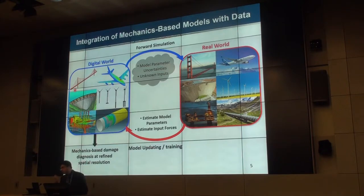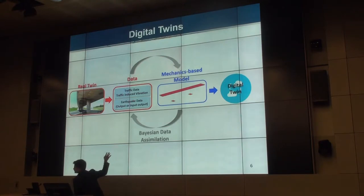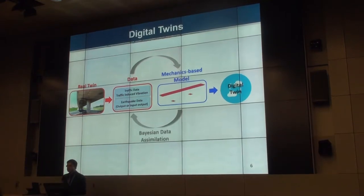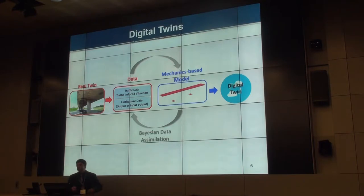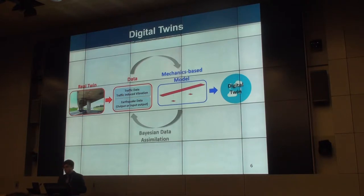This is a really powerful tool that may provide a lot of useful information. We have a real-world structure — a bridge — we develop a mechanics-based model of it, and then we collect data from the real-world structure. The data can be traffic data or earthquake data. We then continuously and iteratively train our model with this data to reduce uncertainties in the parameters and inputs. The outcome is what we call a digital twin — a digital replicate of the real-world asset that evolves through the lifetime of the structure as data is continuously collected and the model is continuously updated.